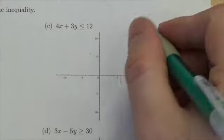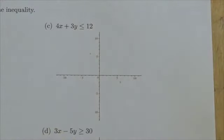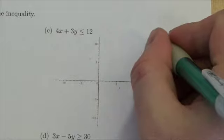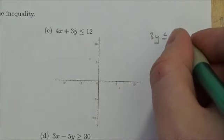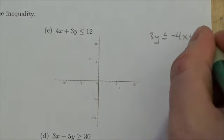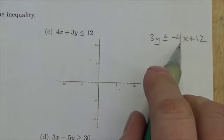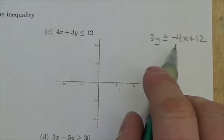So what I've got to do here first of all is isolate that y. So I'll move the 4x over so 3y is less than or equal to negative 4x plus 12, and I want to write it like that with the 4x in front because I want this to be in slope-intercept form.